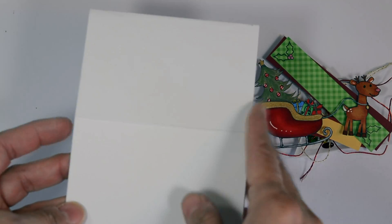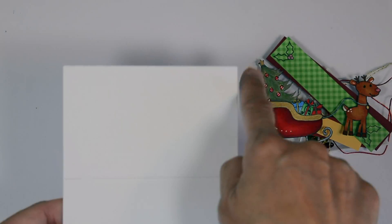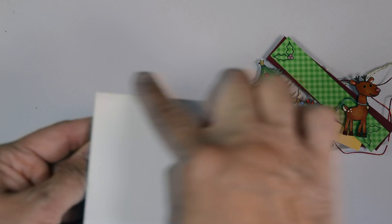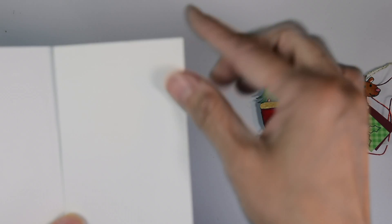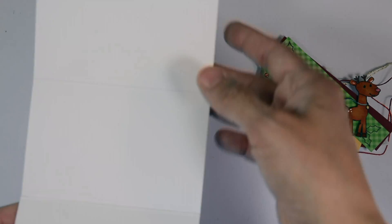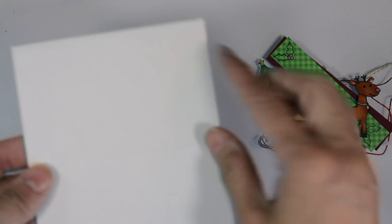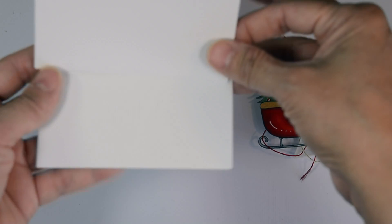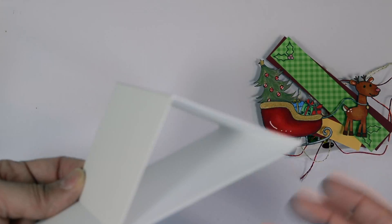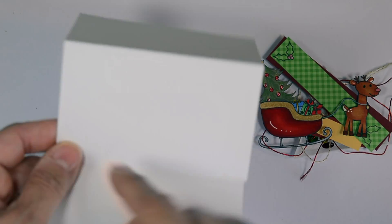We're going to be creating an easel card, like I said. I'll go quickly over the measurements, but I'll have them on my blog. You'll need a piece of cardstock that measures 11 by 4 and a quarter. Then we're going to score at 5 and a half, and then at 2 and 3 quarters. Or basically, you're going to fold one panel in half. So again, I'll go over it. It's 4 and a quarter by 11. Then you score at 5 and a half, and then at 2 and 3 quarters.